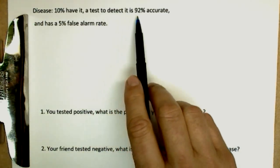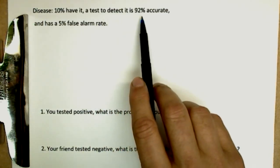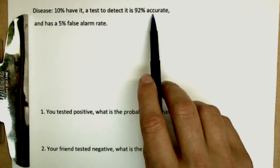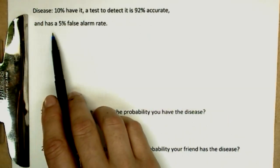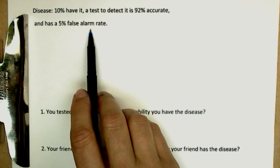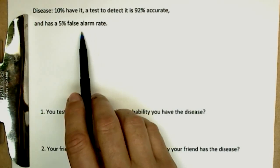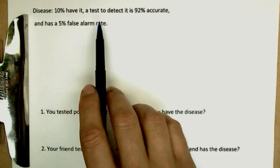Our test to detect it is 92% accurate. So that means if you have the disease, it's going to notice that you have it 92% of the time. But it also has a 5% false alarm rate. Now that means if you don't have the disease, 5% of the time it will say you have the disease.